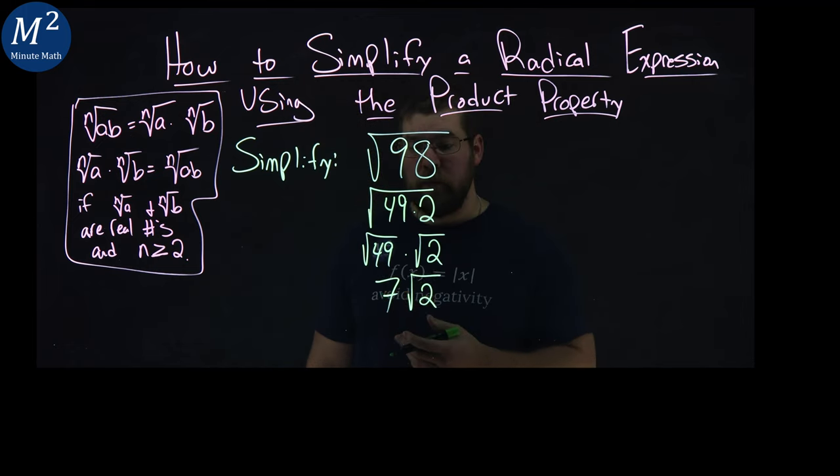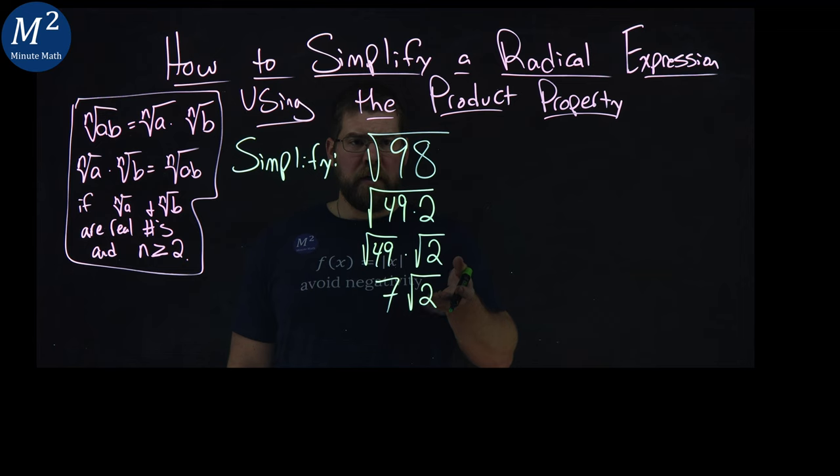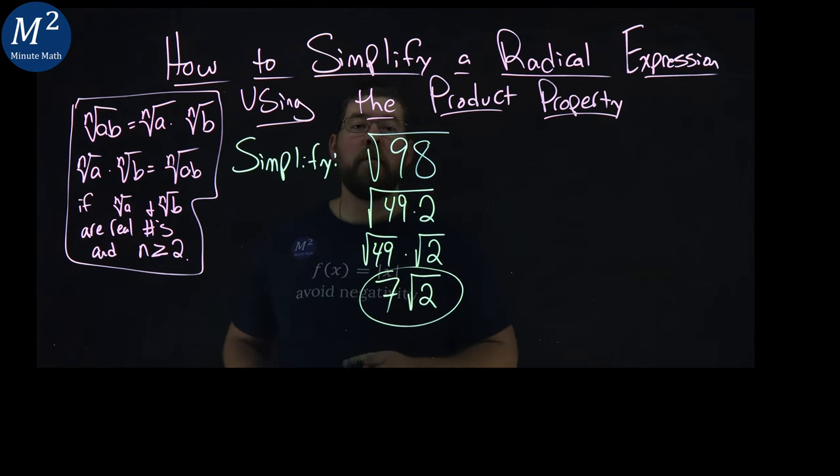And so from here, we have our answer in simplest form. Square root of 98 turns out to be 7 times the square root of 2.